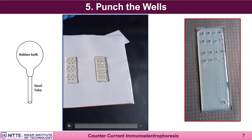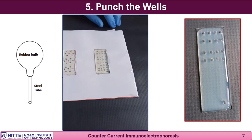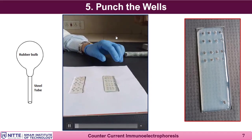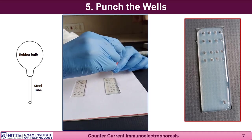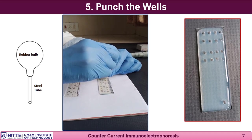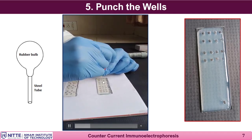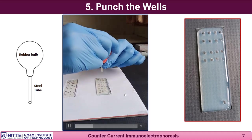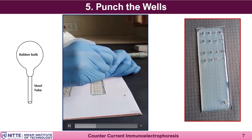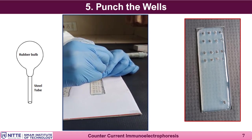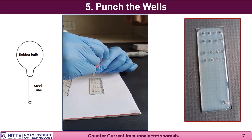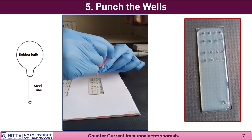The stencil has about 4 rows of paired wells. Each pair of wells for antigen and antibody is approximately 5 mm apart from one another, and each paired row is approximately 1 cm apart. Wells are punched using the punch, and any remaining agarose after punching can be removed with a needle. Once the agarose is cleared, the wells are ready for loading.